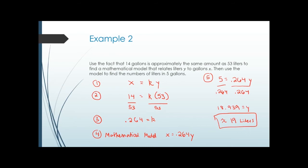If you had set up the initial model with k on the x side instead of the y side, your k would be different, but you'll still get the same answer of 19 liters. That's the nice thing about direct proportion — k can be on either side, but you must be consistent throughout the whole problem so your final answer remains the same.